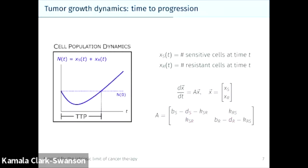The model output we examine is time to tumor progression, or TTP. We measure this as the total time it takes for the total tumor population — sensitive and resistant cells combined — to reach its initial population size.